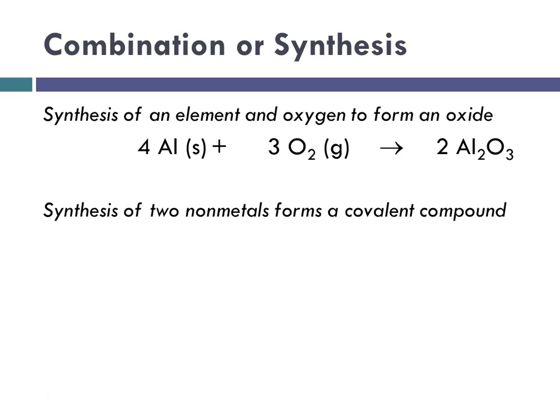The second case would be synthesis of two nonmetals forming a covalent compound. In this case, we have sulfur with oxygen, nonmetal plus nonmetal, and we're going to get sulfur dioxide, which is a binary covalent compound.